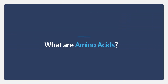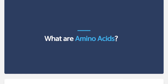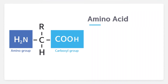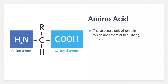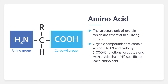What are amino acids? Amino acids are organic compounds that contain amino and carboxyl groups, along with a side chain. They, as the structure units, compose proteins that are essential to living things.